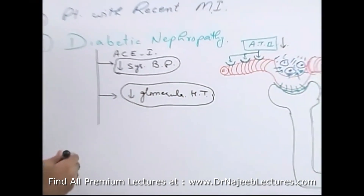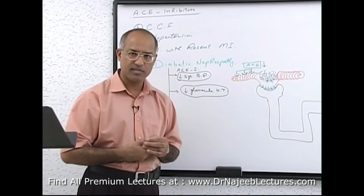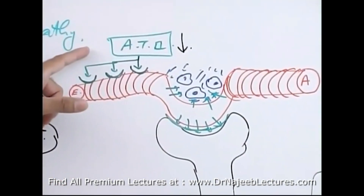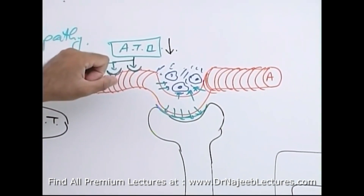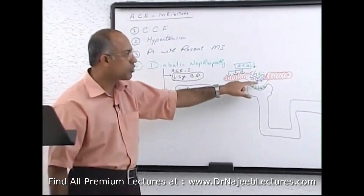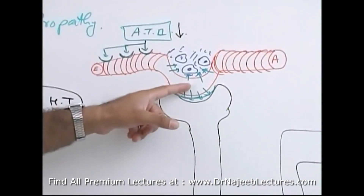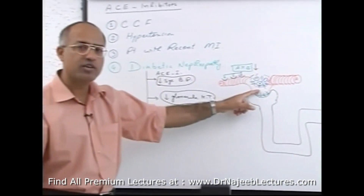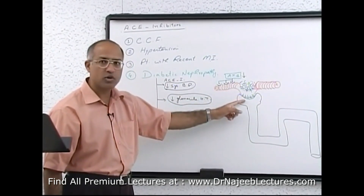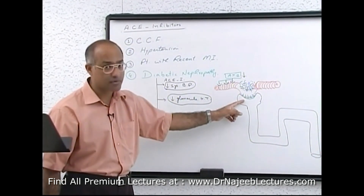When ACE inhibitors are given, angiotensin 2 levels go down and cannot keep the efferent arterioles constricted, so there is slight dilatation of efferent arterioles. Blood in the glomerular capillaries moves forward easily, pressure in the glomerular capillary bed is reduced, and leakage of proteinaceous substances damaging the mesangium and glomerular basement membrane is also reduced — slowing the progression of diabetic nephropathy.